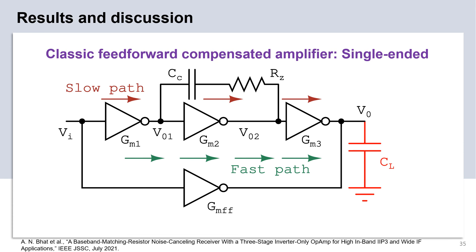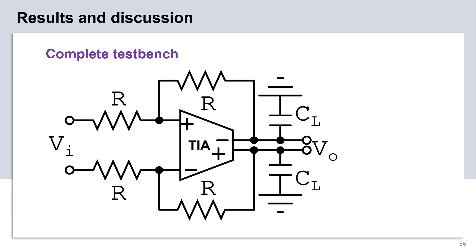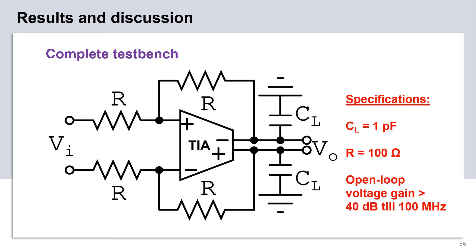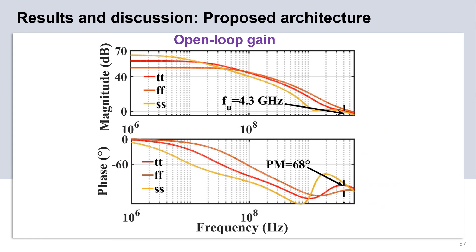We have compared our compensation technique with the conventional architecture as shown in the slide. The conventional amplifier was redesigned on the 65nm technology to ensure a fair comparison. For validating our hypothesis, we used the fully differential version of the amplifiers and created a test bench as shown in the figure. A set of design specifications were chosen: a 1 pF capacitive load, 100 ohms feedback resistor, and an open-loop voltage gain greater than 40 dB till 100 MHz were desired from the amplifier. This slide shows the open-loop gain response of the proposed amplifier for those specifications. All plots are for room temperature. It can be seen that the specification of 40 dB gain till 100 MHz is met for all corners.